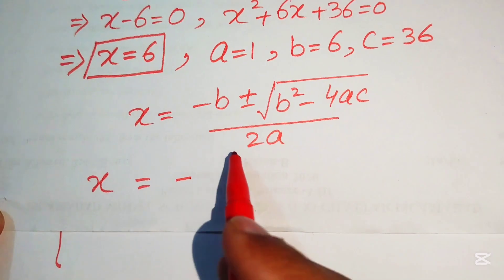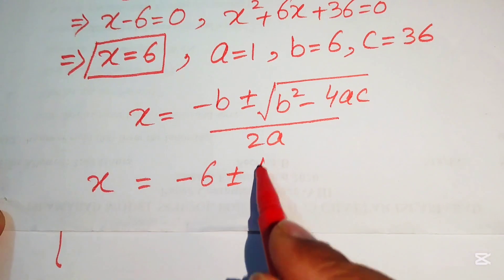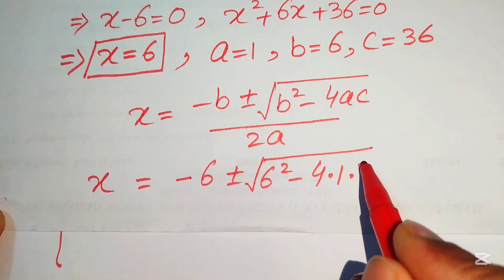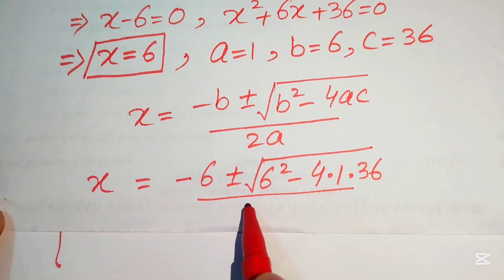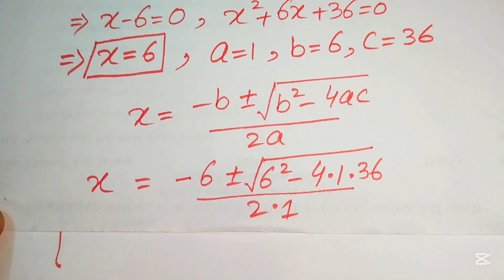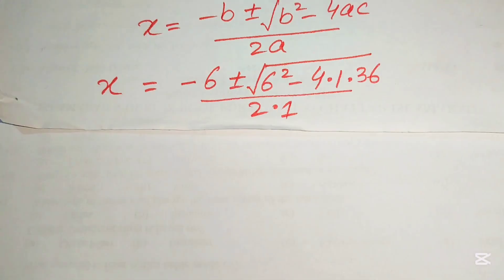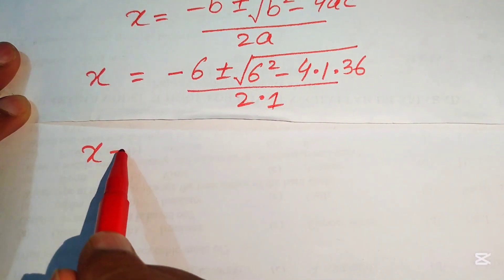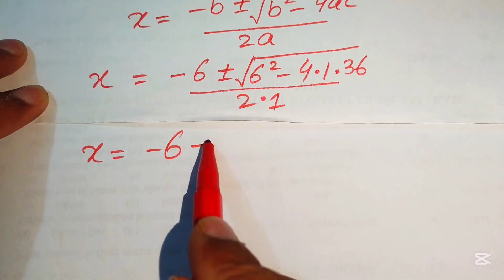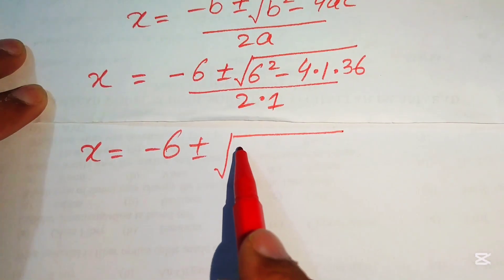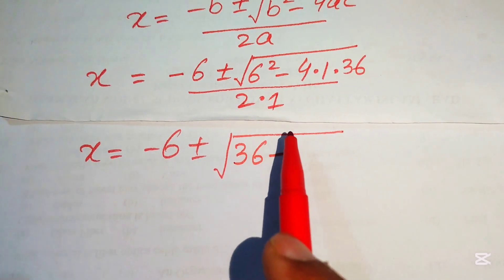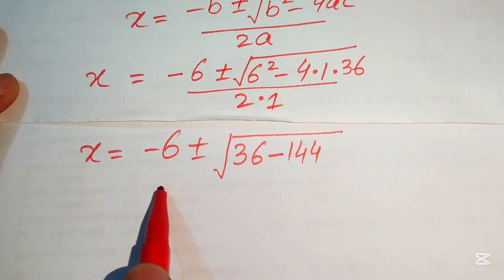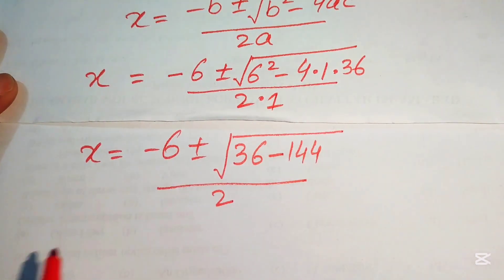Substituting, we get x equals negative 6 plus or minus the square root of (6² minus 4 times 1 times 36), divided by 2. This gives x equals negative 6 plus or minus the square root of (36 minus 144), divided by 2.